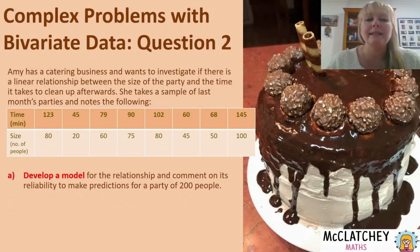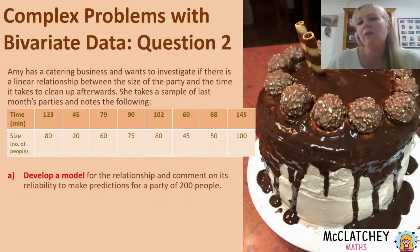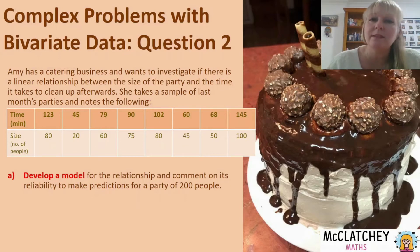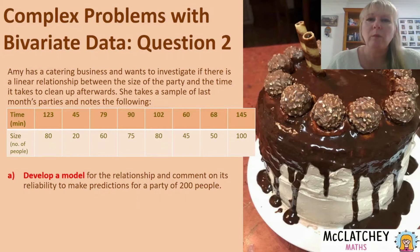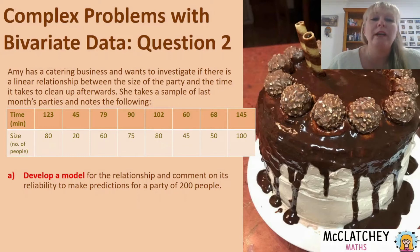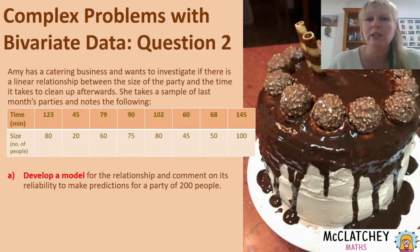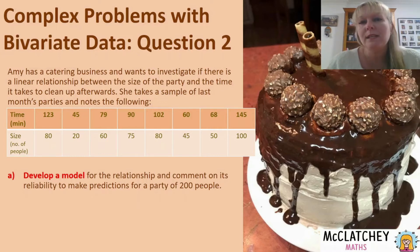Looking at part A, it says to develop a model — I've highlighted the key words here in red. I like following Polly's problem solving process: see, plan, do, check. The 'see' part is reading the language of the question and understanding what it's asking you to do. When it says 'develop a model' that's another way of asking you to come up with a linear equation. Since we've been told she suspects a linear relationship, we need to find the equation y = a + bx, which is the least squares regression line.